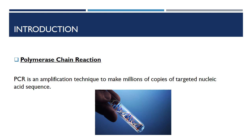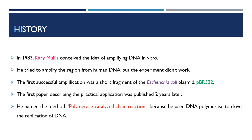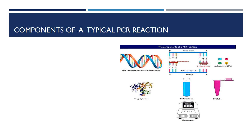How PCR was developed. In 1983, Kary Mullis conceived the idea of amplifying DNA in vitro. Over the next month in the laboratory, he synthesized oligos flanking a region of human nerve growth factor and tried to amplify the region from human DNA, but the experiment didn't work. The first successful amplification was a short fragment of the H3K glycoplasmic pBR322. He named the method polymerase catalyzed chain reaction because he used DNA polymerase to drive the replication of DNA.